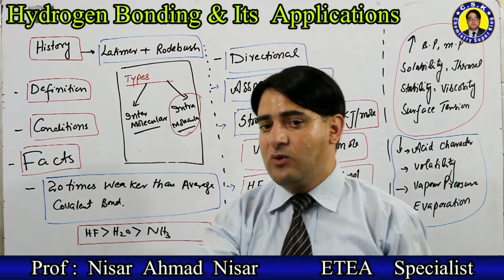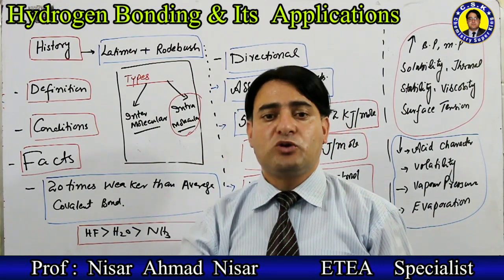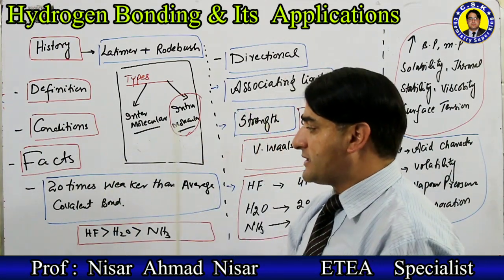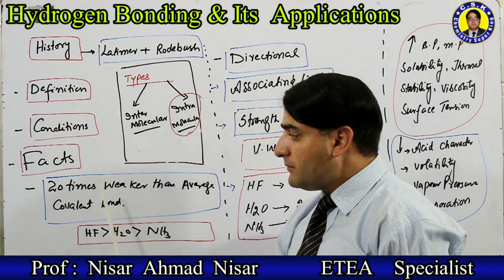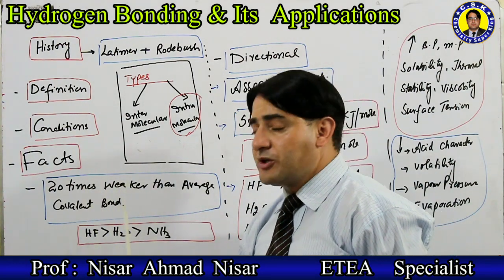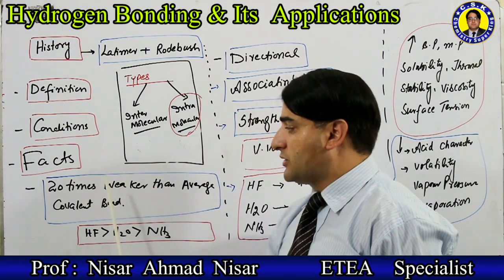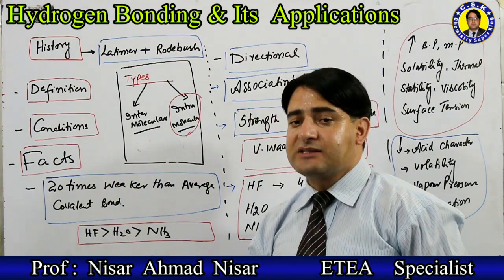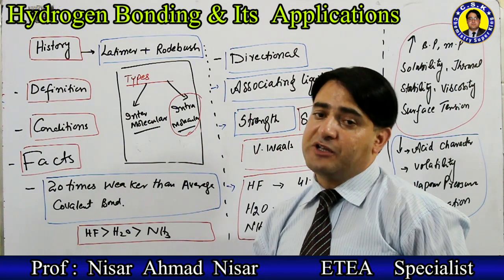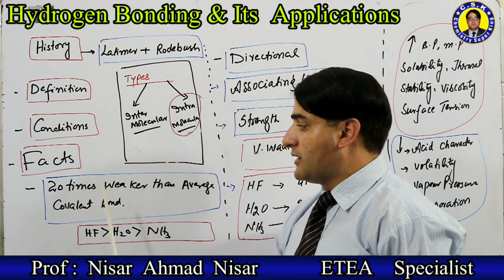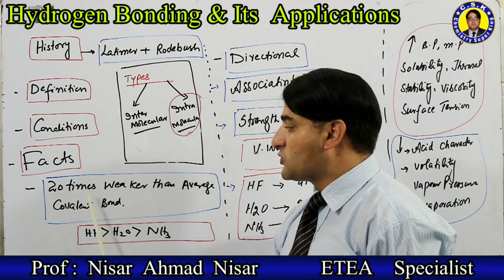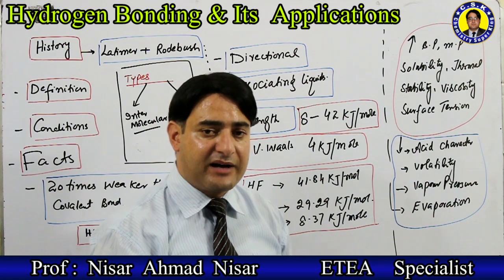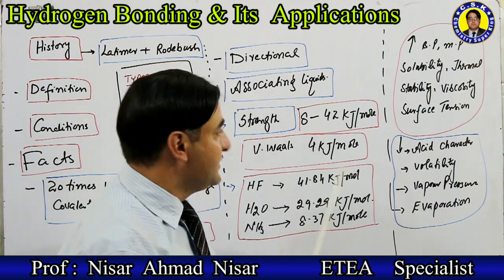Now students, let's talk about some facts that appear in MCQs. The first fact: hydrogen bond is 20 times weaker than the average covalent bond. Hydrogen bond is 20 times weaker than average covalent bond.